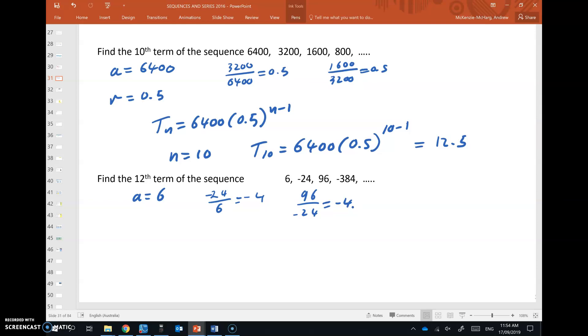alternating between positive, negative, positive, negative. So the sequence rule is this. And the 12th term, when n equals 12, t_12 is 6 by negative 4 to the 12 minus 1.